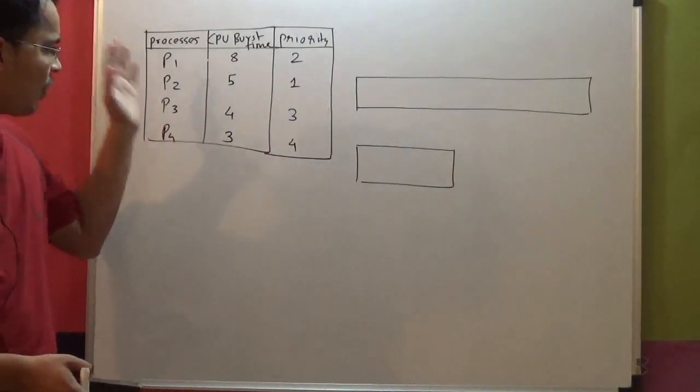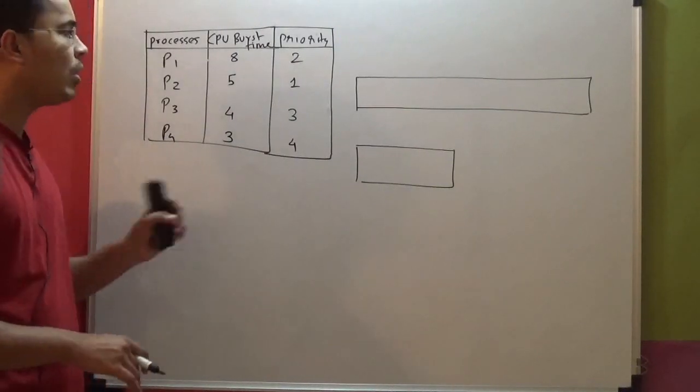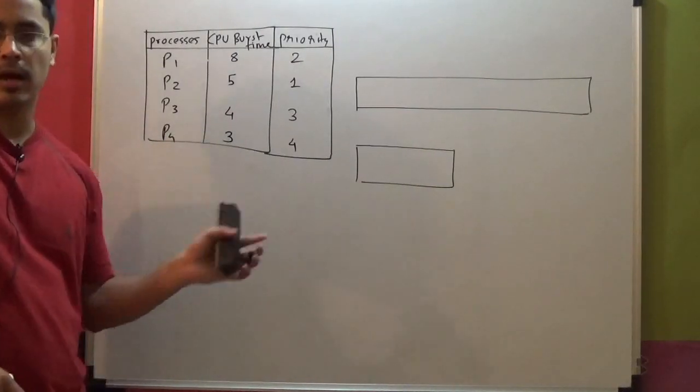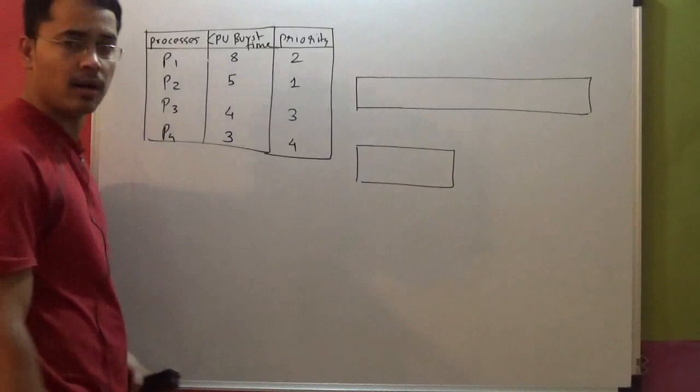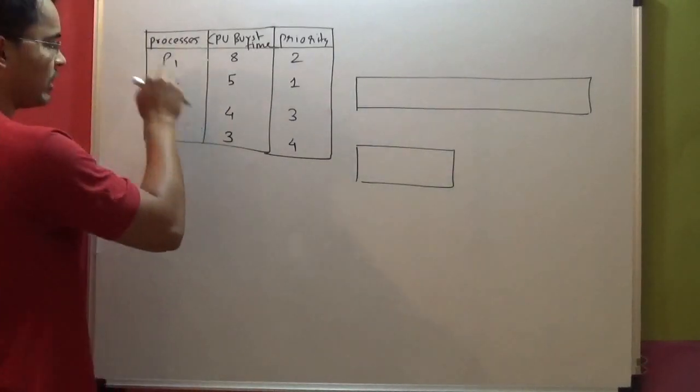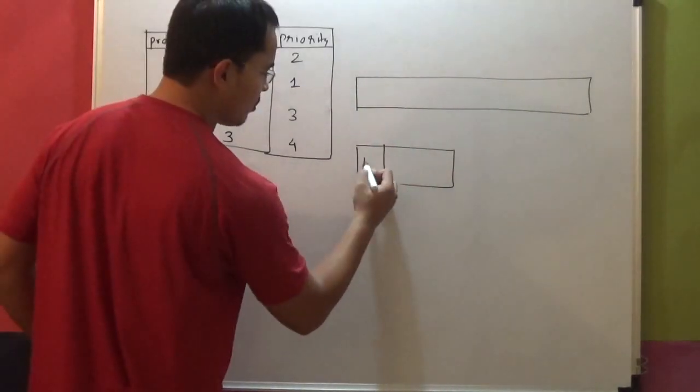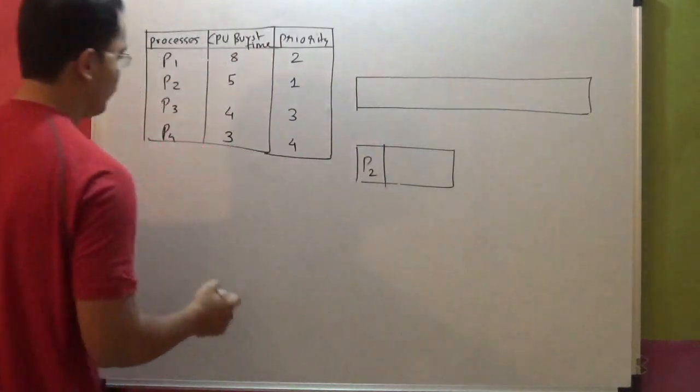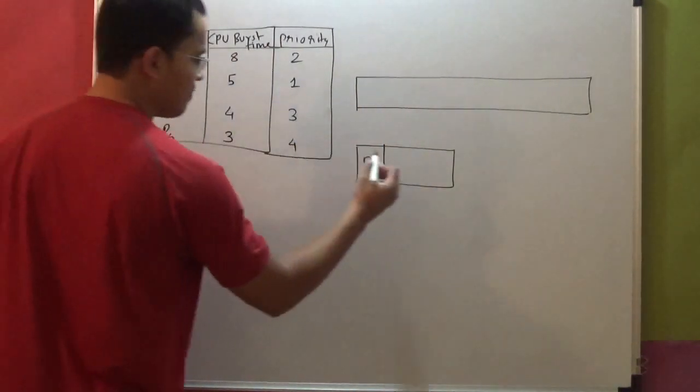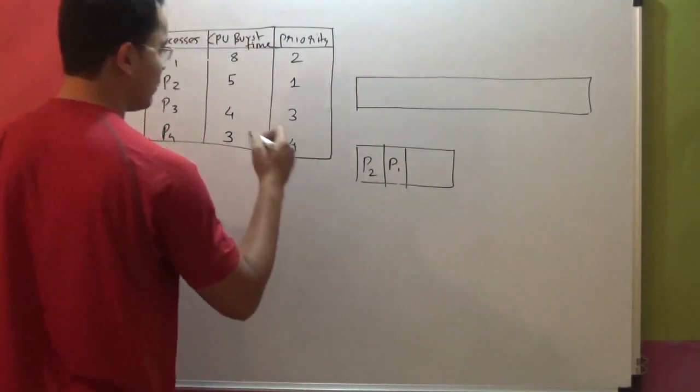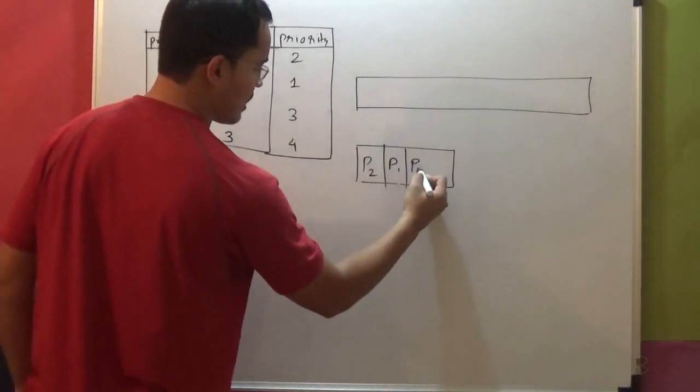Now, out of all the processes that have arrived at the same time, we will have to arrange them according to their priority. Now as we discussed earlier, the highest priority is with P2. So P2 gets into the queue first, followed by P1, then P3, and then P4.